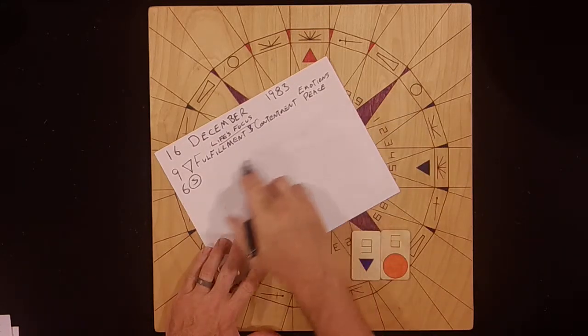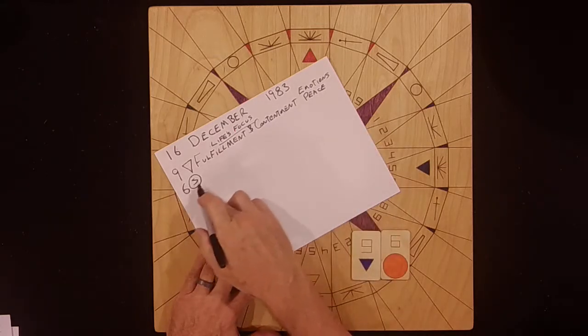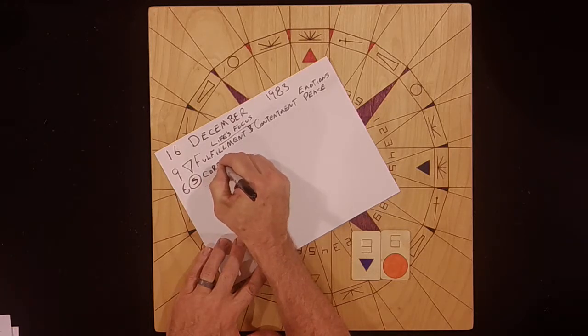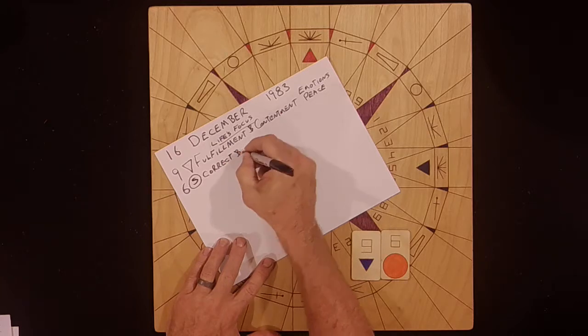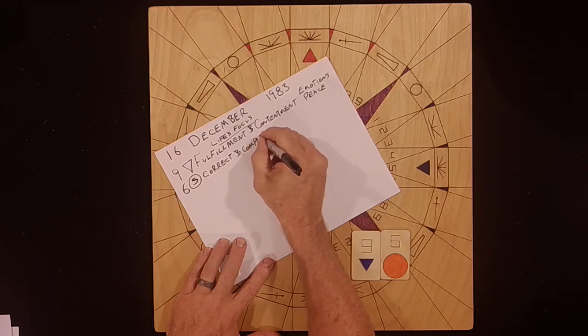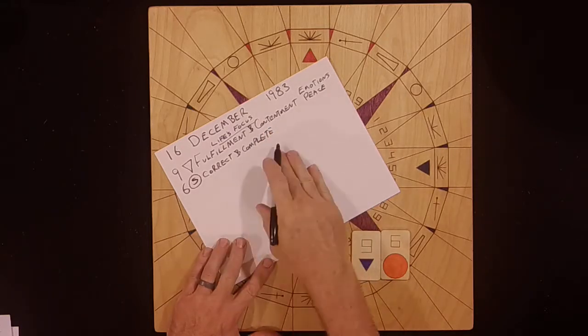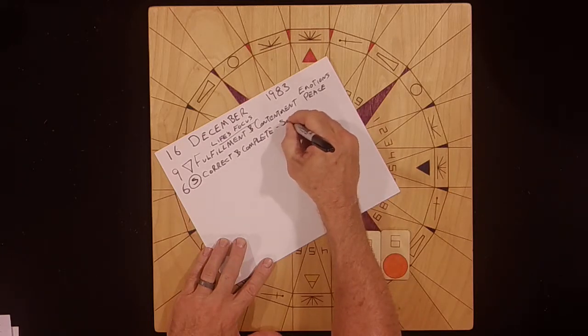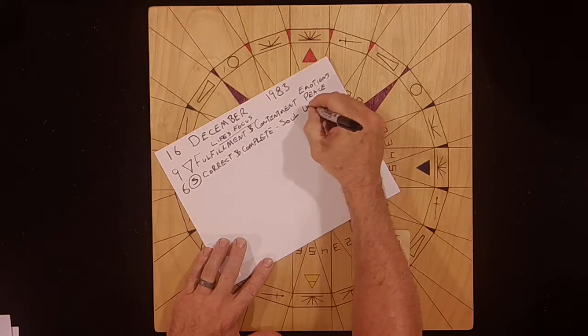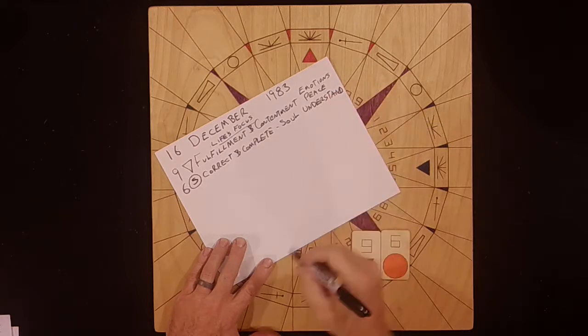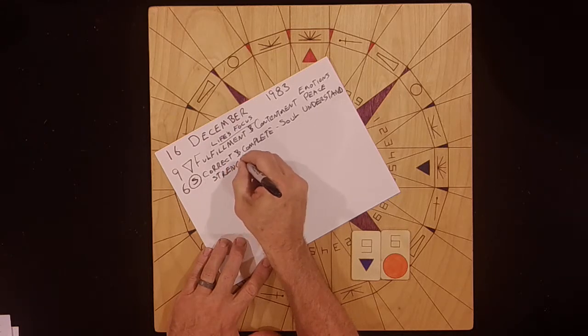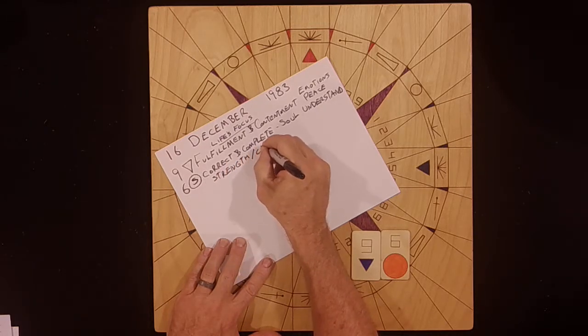And so, the strength or the challenge that's going on in their life has to do with the number 6. It's about being correct and complete. And the element of life, which has to do with the soul and the principle of understand. And this is the strength or challenge.